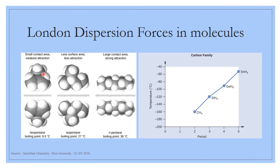Surface area also affects London dispersion forces. If a molecule is rolled up and condensed, it has less ability to reach out and interact with another molecule — essentially like a ball that just bounces around. As you start to spread out, the London dispersion forces get stronger and boiling point increases. Within a family, as molar mass gets bigger, boiling point also gets bigger.